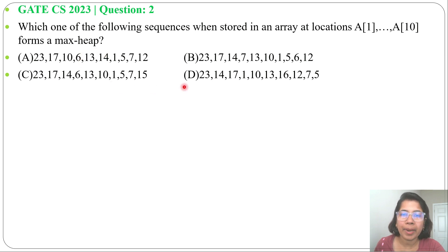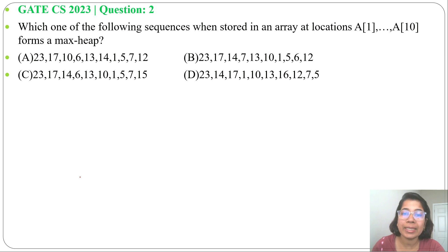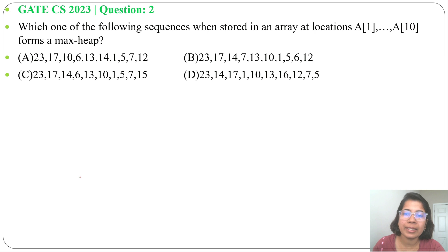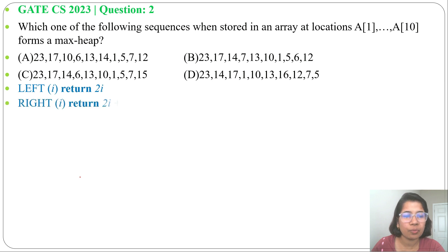In case of a max-heap, the parent value should be greater than or equal to its children. If it's in tree format, you can easily identify parent and child. But when it's in array format, for index i, its left child will be at index 2i and its right child will be at index 2i+1.